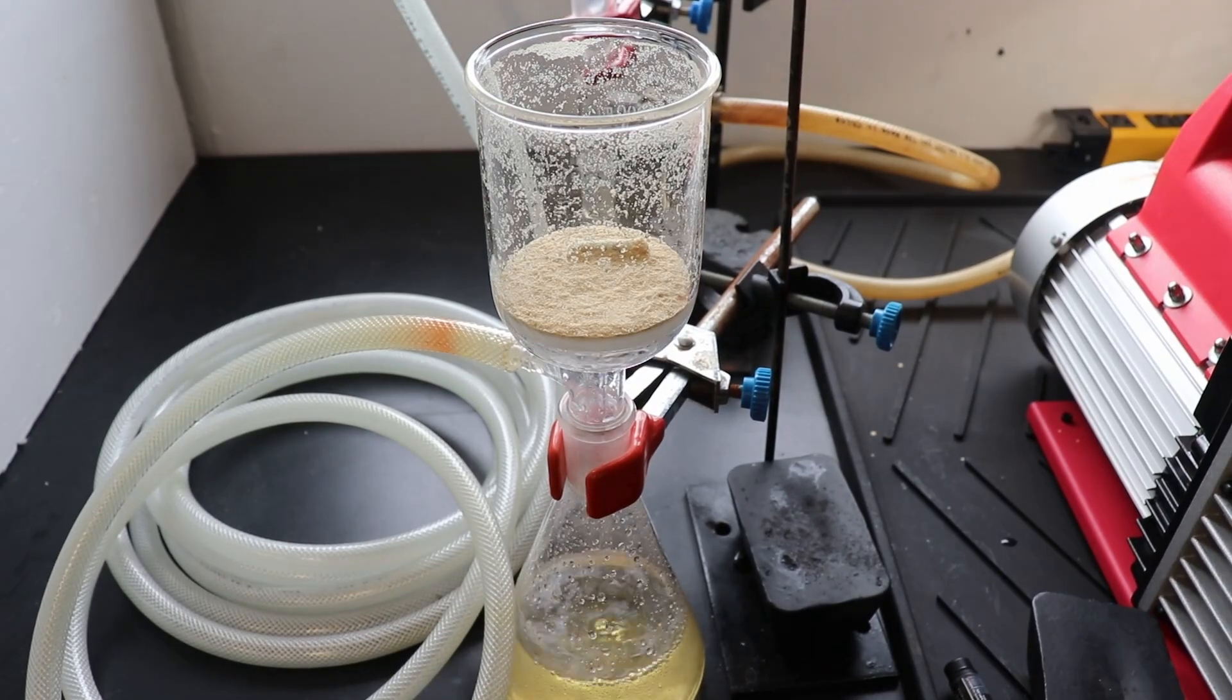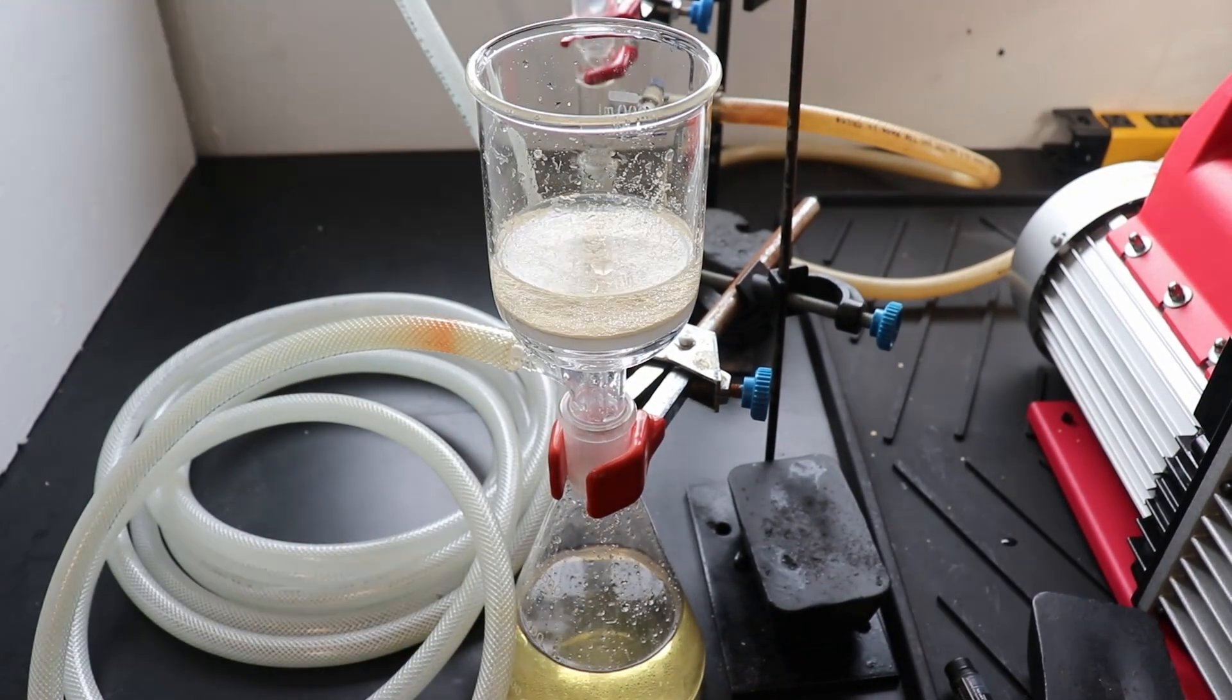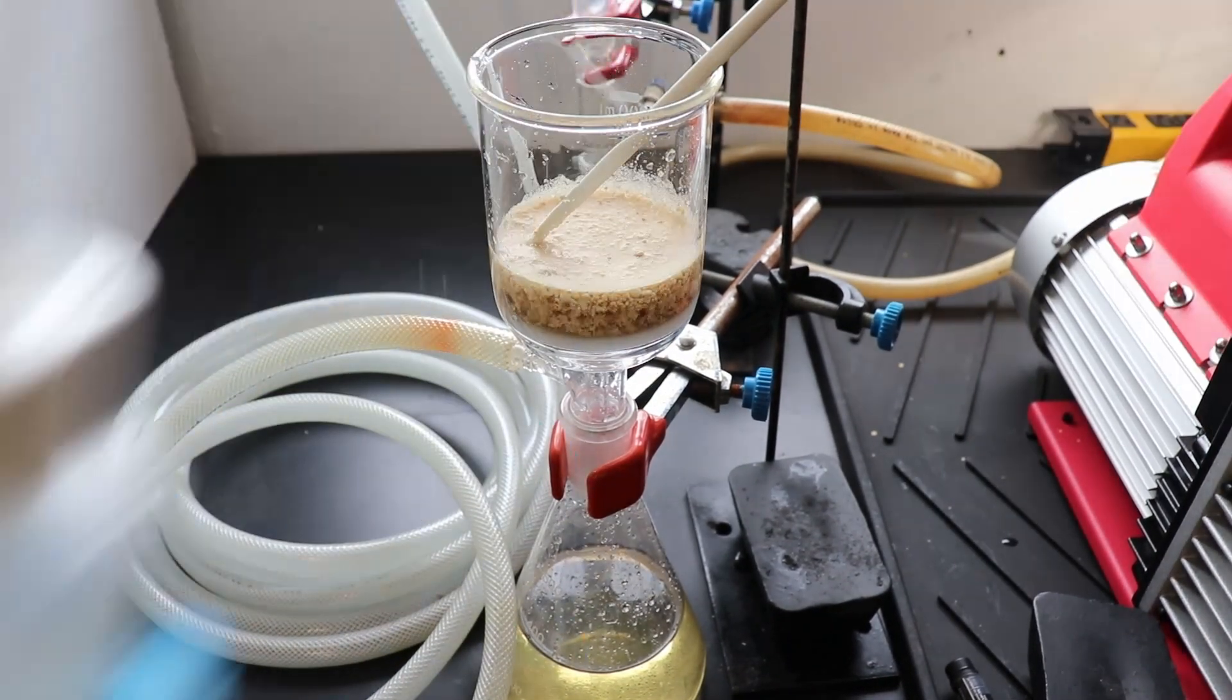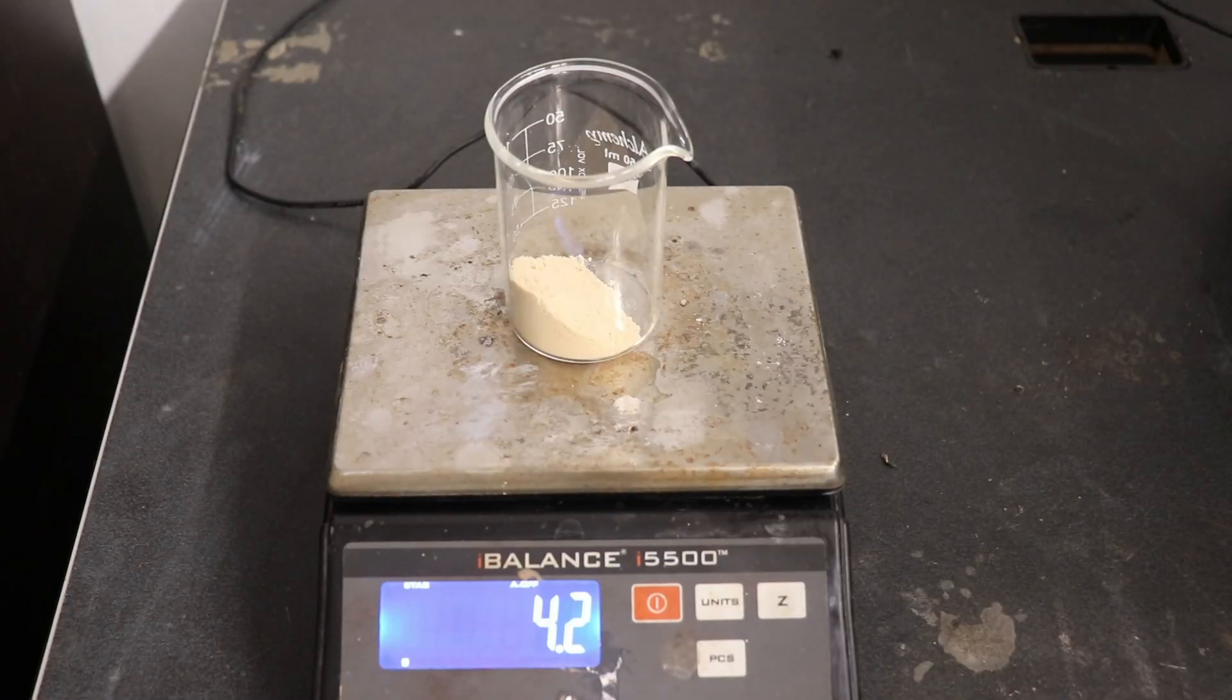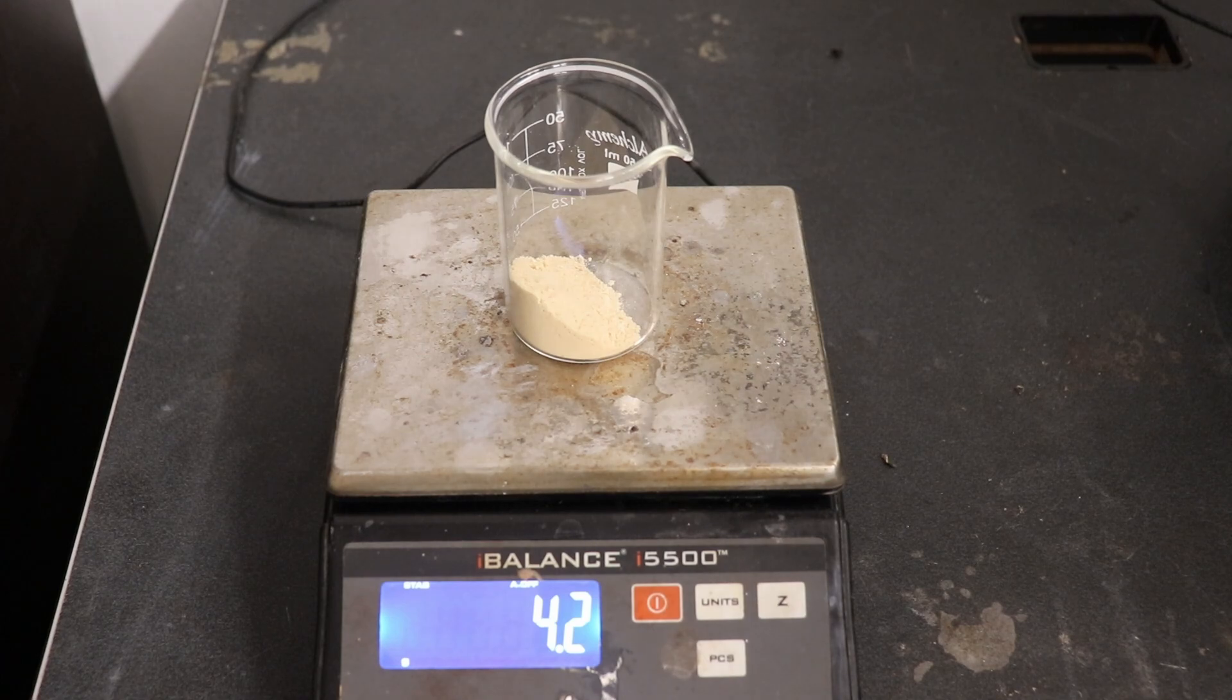The crude product was filtered off, washed with a copious amount of distilled water, and then dried thoroughly on the pump. The yield of crude 2-methoxynaphthalene from methyl iodide was 4.2 grams, which is 77%.